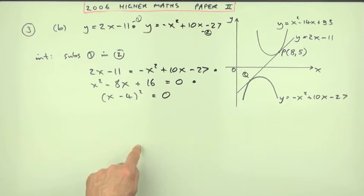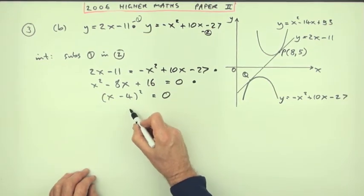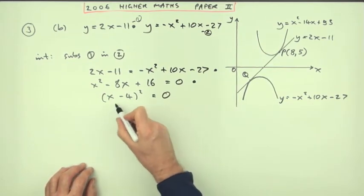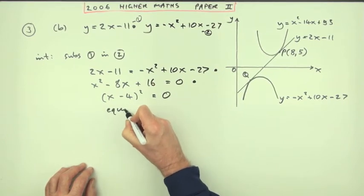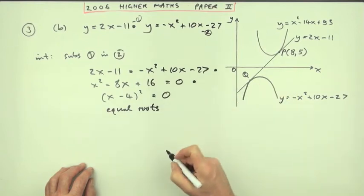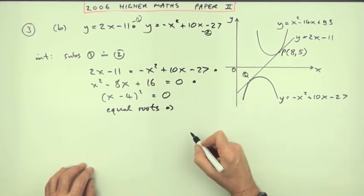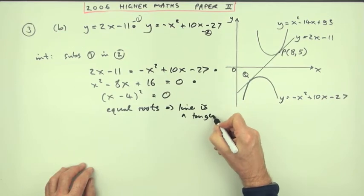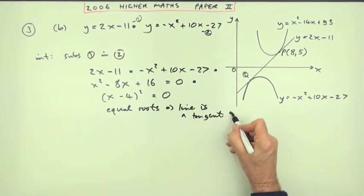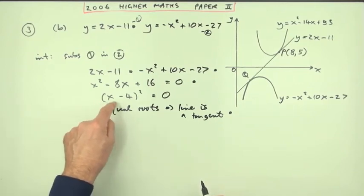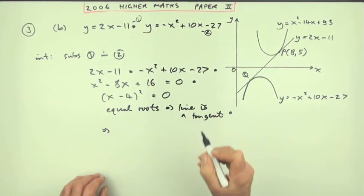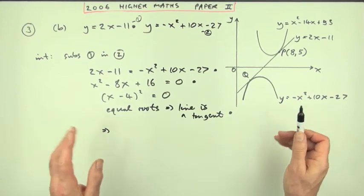That's three marks so far. The final mark is for the coordinates of Q. Before stating x equals 4, you must make a statement — something like: having equal roots means only one answer, and equal roots means the line is a tangent because there's only one point of intersection. That's the appropriate approach: make the statement, show that it factorises to a perfect square, and then get the mark.